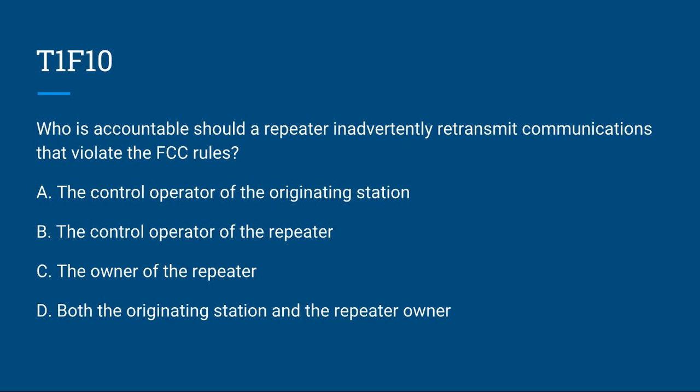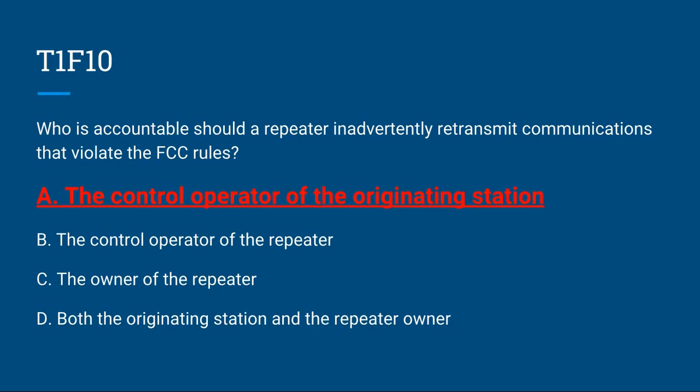T1F10: Who is accountable should a repeater inadvertently retransmit communications that violate the FCC rules? A. The control operator of the originating station. B. The control operator of the repeater. C. The owner of the repeater. Or D. Both the originating station and the repeater owner. Correct answer is A: the control operator of the originating station.